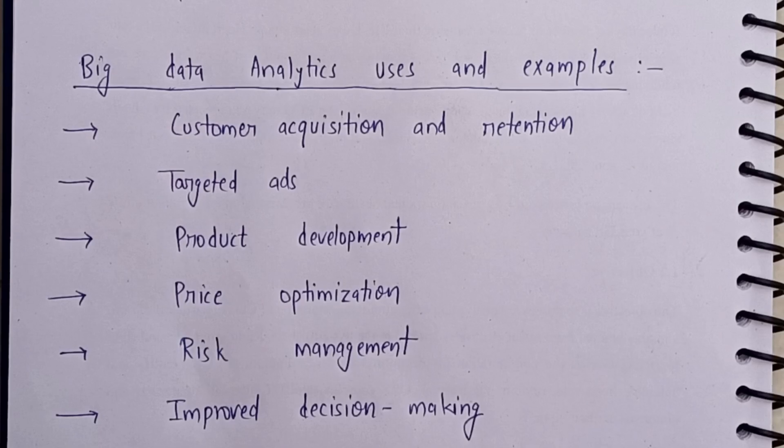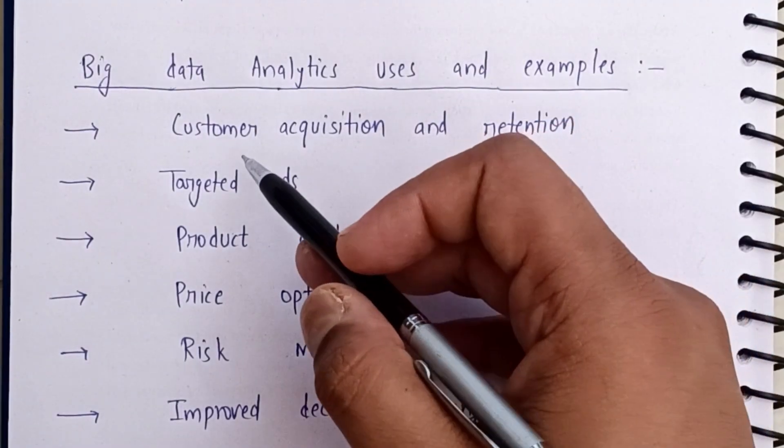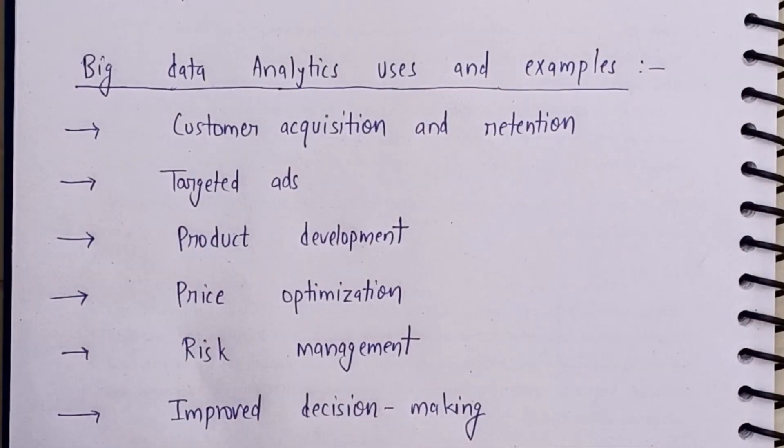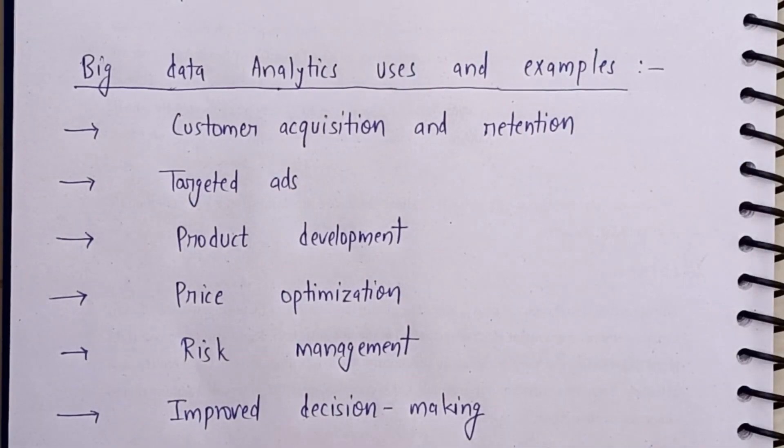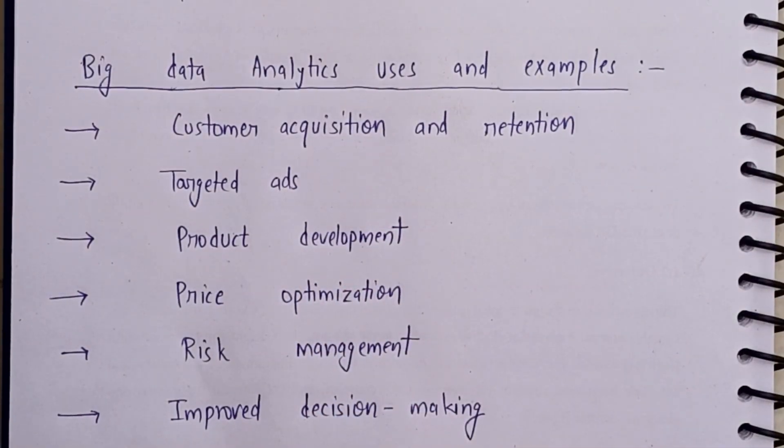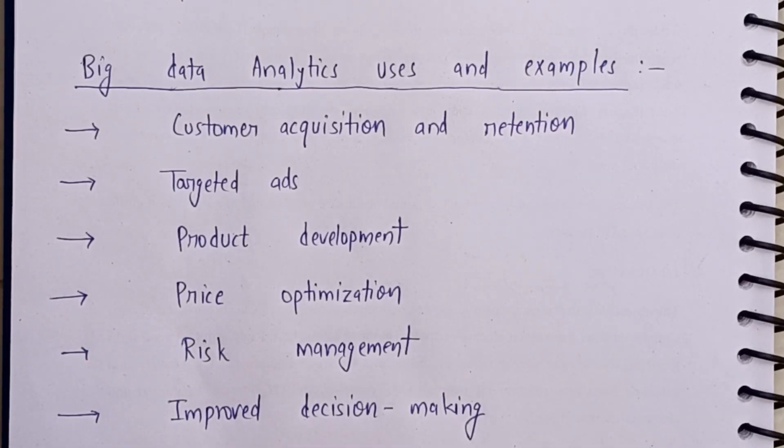Now we will see why we are using big data analytics. If you do this analysis, you get hidden patterns, core relationships, customer preferences. This includes customer acquisition - identifying what type of data customers are viewing, what things they like, storing that information and showing them relevant items. Retention works the same way. Targeted ads are used based on what type of products they're using, so they can purchase more from the website. And product development - if someone is using this kind of product, what additional features can be added to make it better.